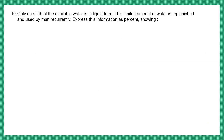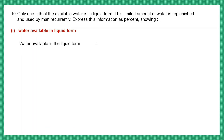Question 10. Only one-fifth of the available water is in liquid form. This limited amount of water is replenished — that means it's given back to the earth — and used by man recurrently, continuously. They want us to express whatever information is given here as percent. So let's start. Water available in the liquid form is given to us as one-fifth.